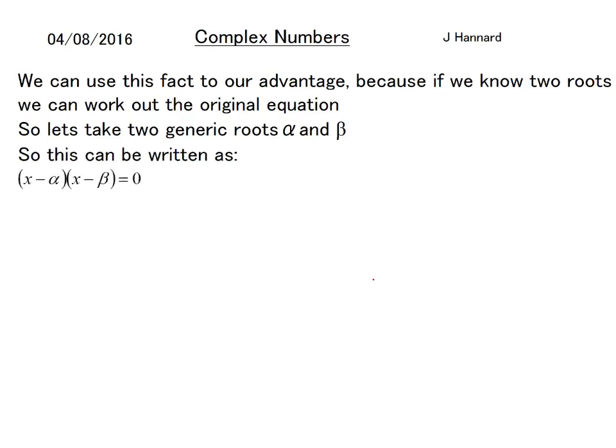This can be written as (x - α)(x - β) = 0. Remember, a root inside a bracket is x minus the root, so we reverse it. If we expand that, we get x² - αx - βx + αβ = 0.